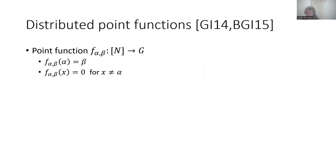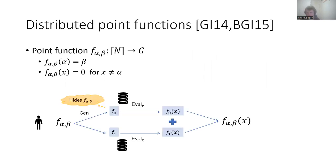So first, point functions are just functions which can be non-zero on only one special point and zero everywhere else. The DPF allows to secret share a point function between two servers in a way that allows for the servers to perform distributed evaluation, such that it is possible to add the output shares of the servers to recover the evaluation of the point function.